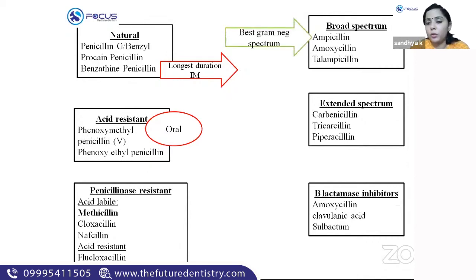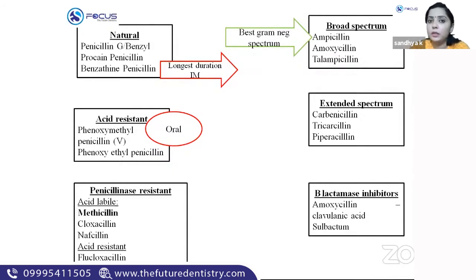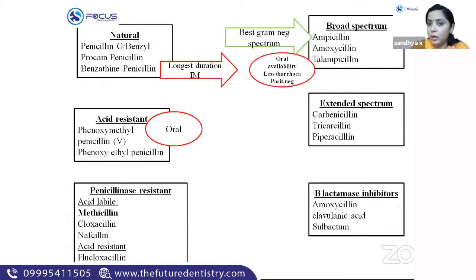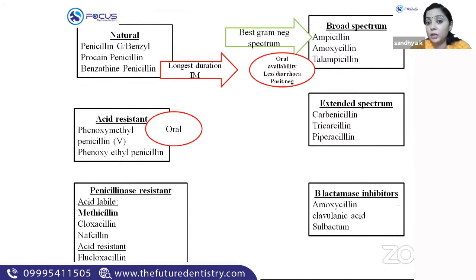Broad-spectrum penicillins include ampicillin, amoxicillin, and talampicillin. Ampicillin has a very good gram-negative spectrum and is usually given intravenously. Amoxicillin has advantages over ampicillin: better oral bioavailability, less first-pass metabolism, lower chance of diarrhea, and it is effective against both gram-positive and gram-negative organisms.